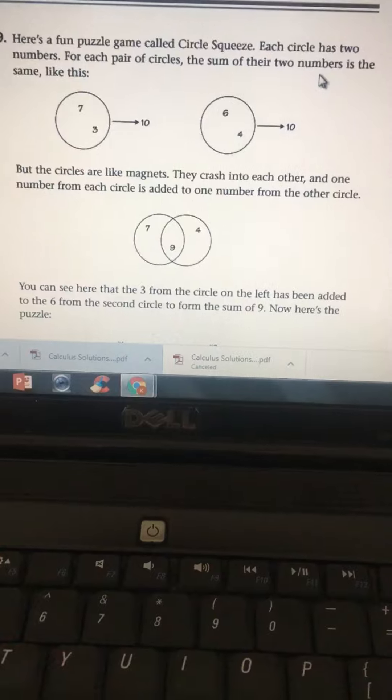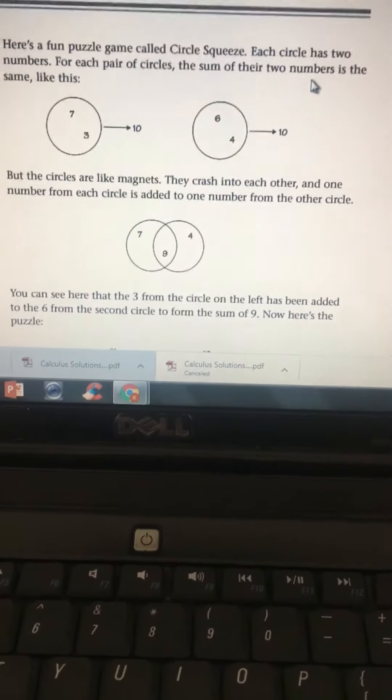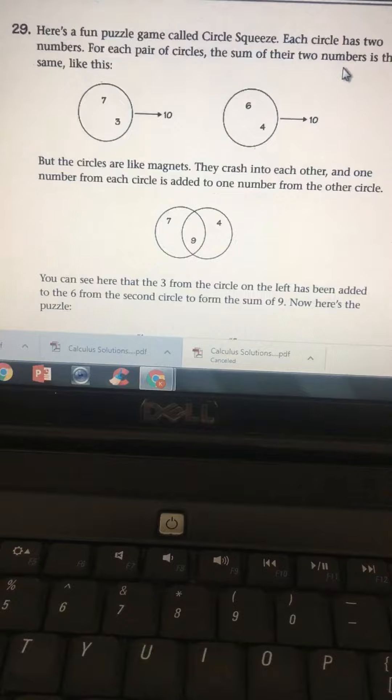Circle 2 has two numbers, 6 and 4, whose sum will be 10. But the circles are like magnets. They crash into each other and one number from each circle is added to one number from the other circle.